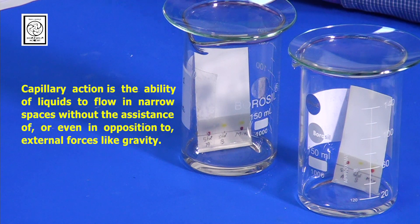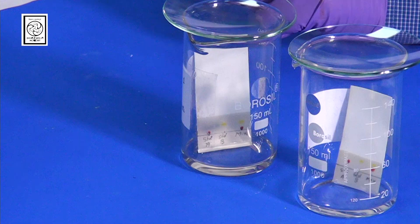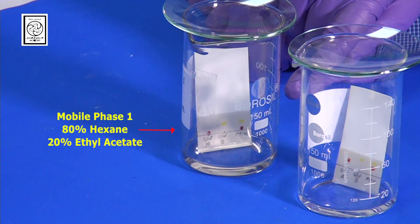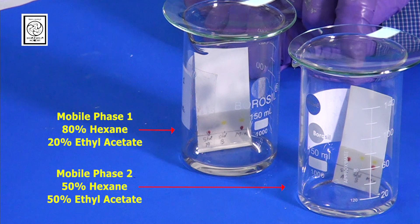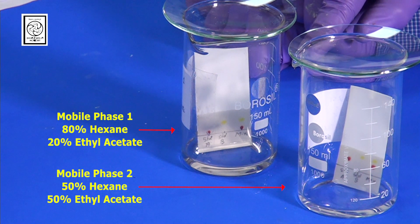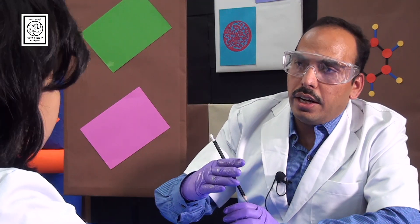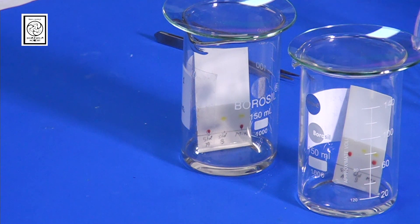Capillary action is the property of liquids to rise through narrow spaces without any assistance of external forces. Mobile phase one contains 80% hexane and 20% ethyl acetate, and mobile phase two contains 50% hexane and 50% ethyl acetate. Due to the different polarity and adsorption properties of the components, they will run on the stationary phase to different distances, and we will observe separation. Let us wait a few minutes until the mobile phase rises to about one centimeter from the top.